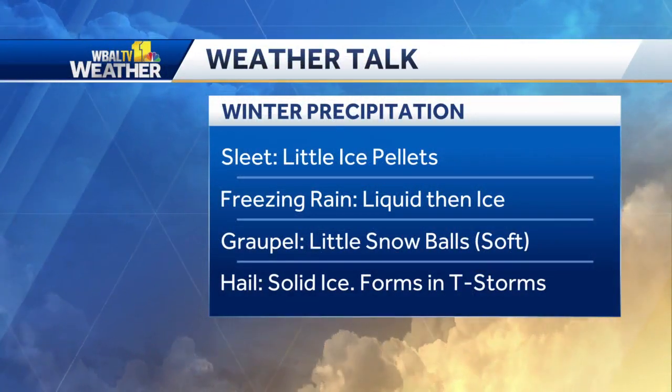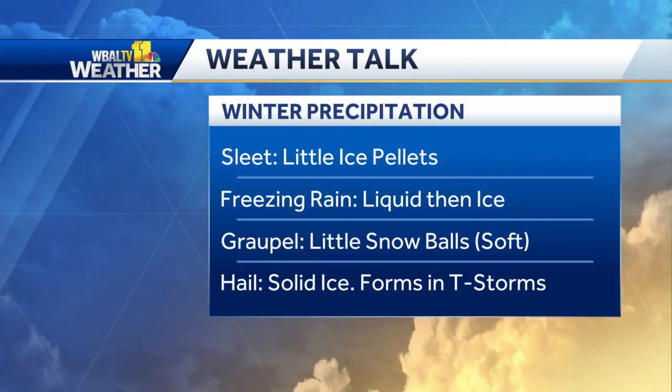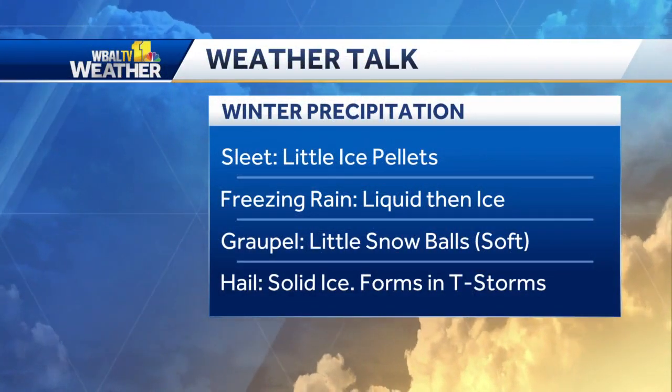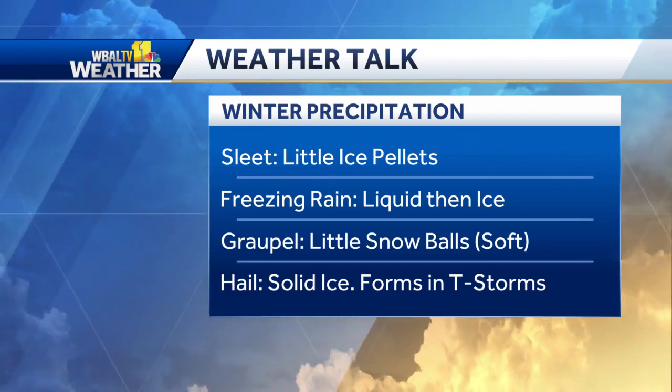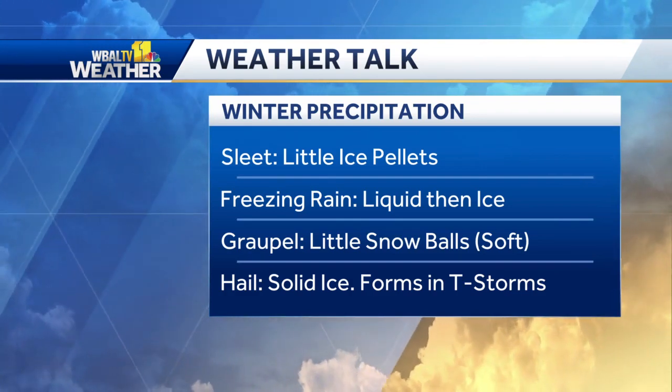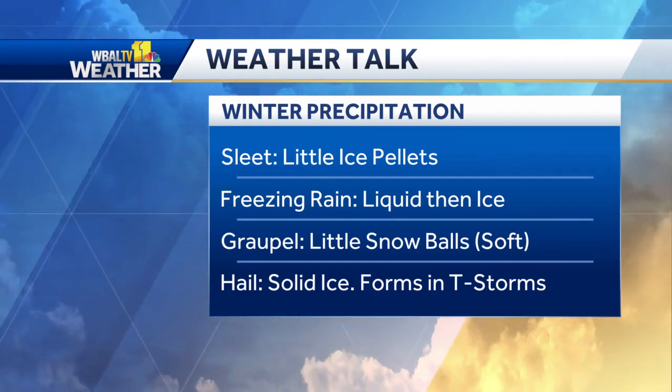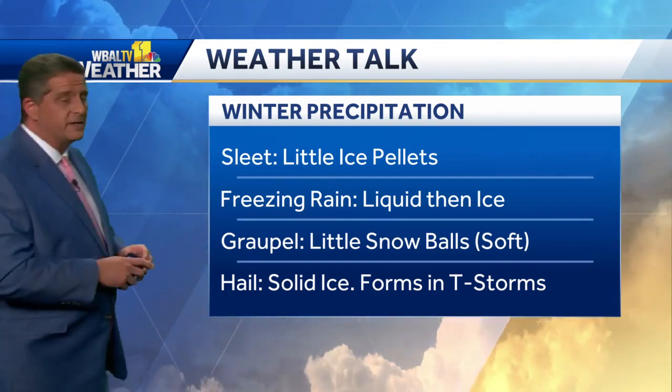Sleet comes down in the form of little ice pellets. They kind of ping off your windshield. When you see it bounce off your windshield or the hood of your car, that's sleet.